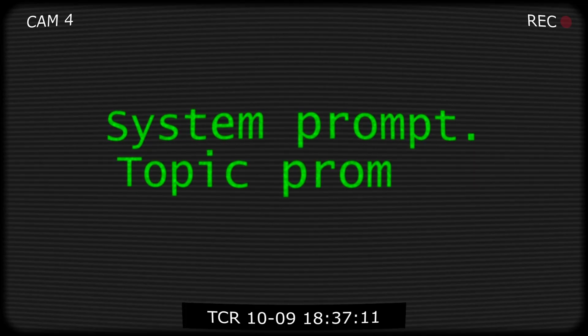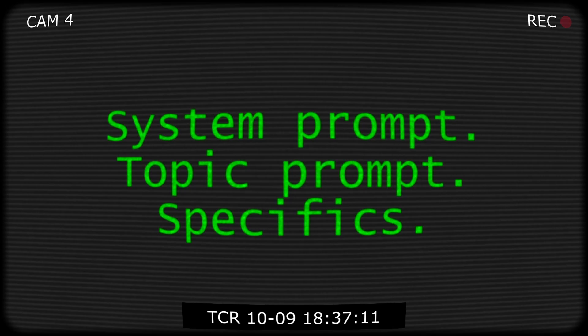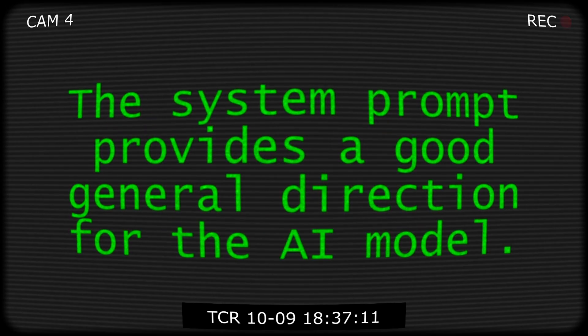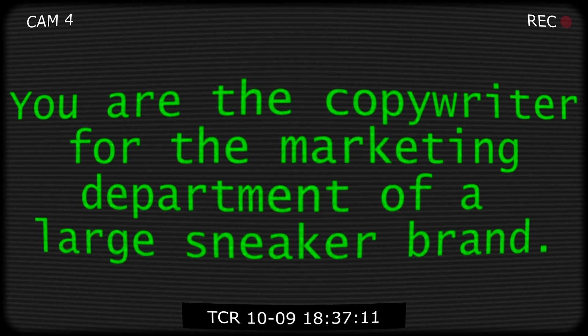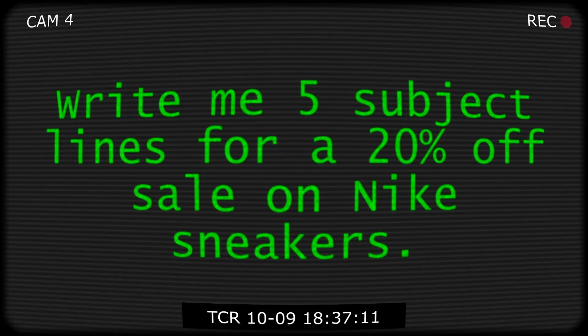This will actually be useful outside of Braze as well when you're working with AI — think of this as a 101 of AI prompting anywhere. For example, if you're prompting Microsoft's Copilot or OpenAI's ChatGPT, here's a good way to structure those prompts. We have the system prompt, the topic prompt, and the specifics. The system prompt provides a good general direction for the AI model — for example, 'You are the copywriter for the marketing department of a large sneaker brand.' Next, specify the topic or subject you want the AI to focus on, being concise and descriptive — for example, 'Write me five subject lines for a 20% off sale on Nike sneakers.'